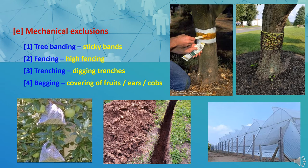Mechanical exclusion methods are a combination of various approaches. First is tree banding — sticky bands can be used around the trunk to prevent insects from climbing to the treetops. Second is fencing — high fencing around fields prevents larvae from reaching one field to another. Third is trenching — insects like armyworms, nymphs of grasshoppers and locusts can be checked by digging trenches around the field; marching insects fall in and can be killed. Fourth is bagging — loose muslin cloth or paper covers are placed on fruits, spikes, or ears to prevent females from laying eggs.